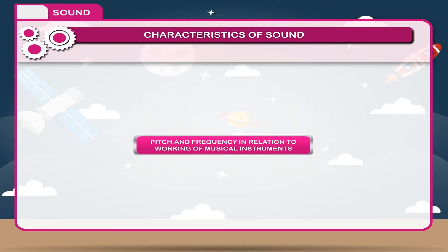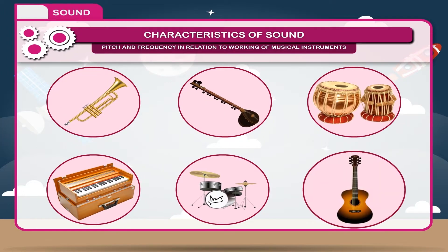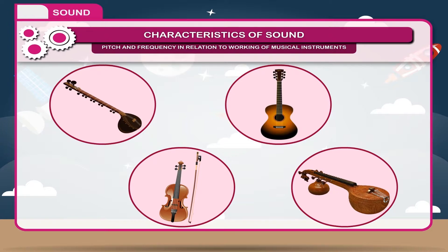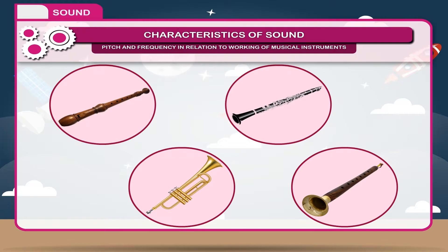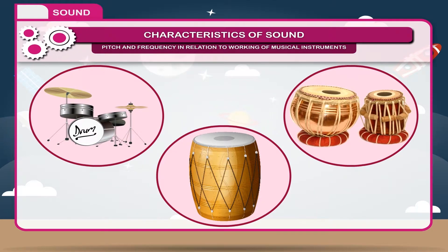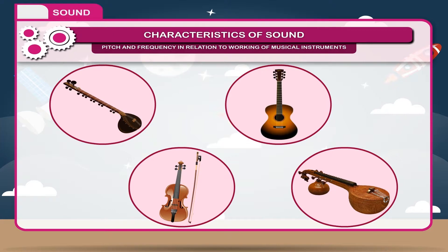Pitch and frequency in relation to the working of musical instruments. There are various types of musical instruments which produce different sounds. They can be classified into four types: string, percussion, wind, and reed instruments. They all produce sound but in different ways. The sound produced by a flute, a wind instrument, is more shrill — with high pitch and frequency — than the sound produced by a drum, a percussion instrument with a stretched membrane.